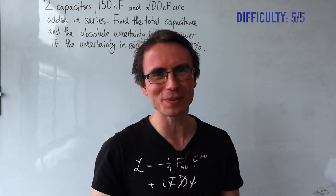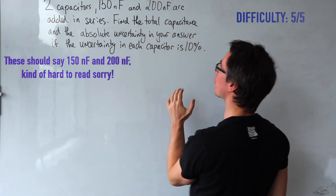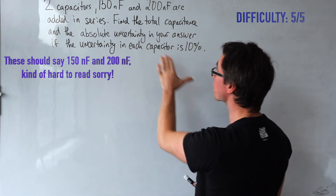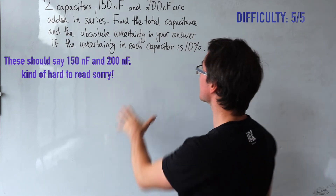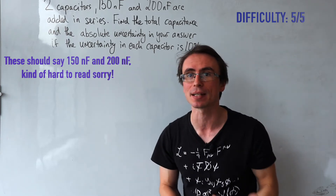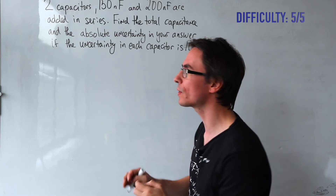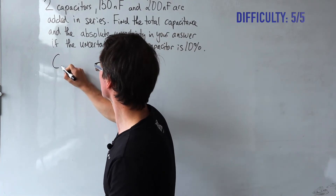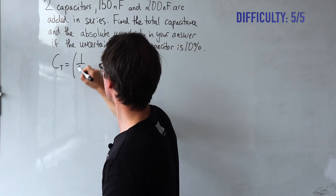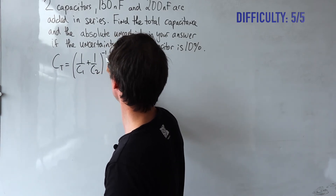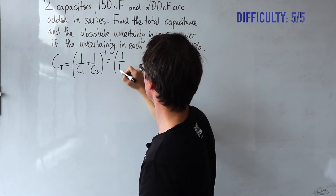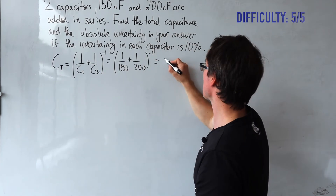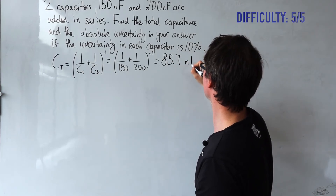Are you ready for the hardest question? Two capacitors — 150 nanofarads and 200 nanofarads — are added in series. Find the total capacitance and its absolute uncertainty if the uncertainty in each capacitor is 10%. Capacitors in series combine in the opposite way to resistors: total capacitance equals 1 over C1 plus 1 over C2, raised to the power of minus 1. So: 1 over 150 plus 1 over 200, raised to minus 1, gives 85.7 nanofarads.